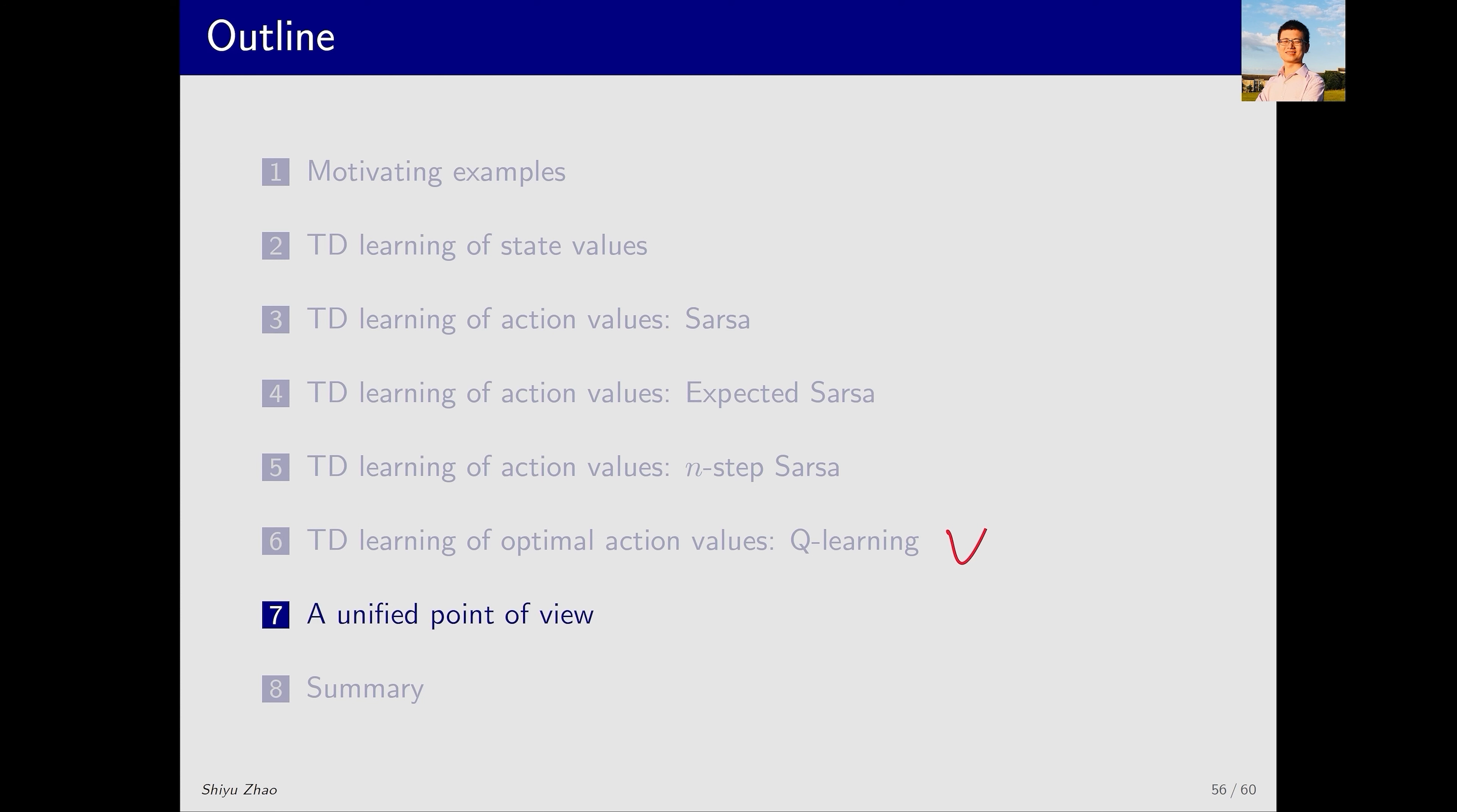The off-policy nature of Q-learning is extremely important. Later, we'll study deep Q-learning. Why choose Q-learning when combining neural networks with temporal difference algorithms? The off-policy characteristic of Q-learning plays a crucial role here.